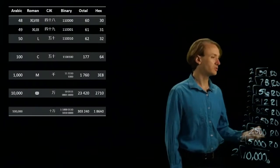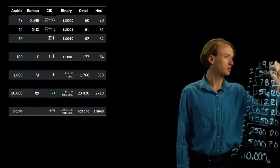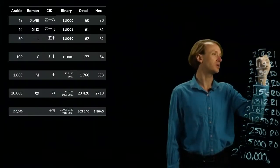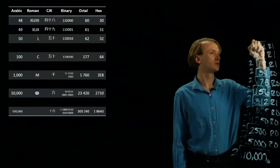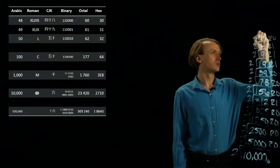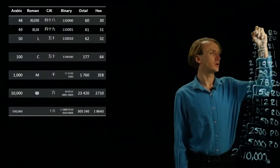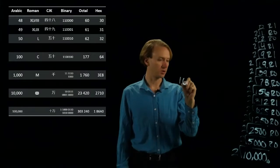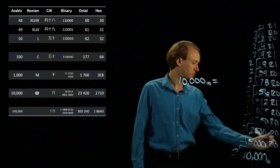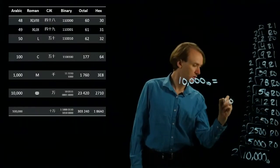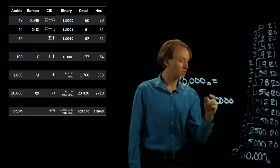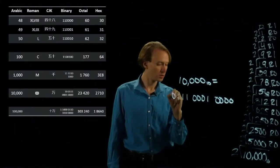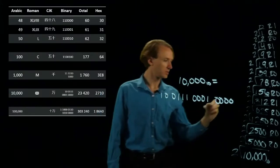39 divided by 2 gives me 19 remainder 1. 19 divided by 2 gives me 9 remainder 1. 9 divided by 2 gives me 4 remainder 1. 4 divided by 2 is 2 remainder 0. 2 divided by 2 is 1 remainder 0. And 1 divided by 2 is 0 remainder 1. So starting from the bottom, the number 10,000 in base 10 is equal to 0010 0111 0001 0000 in binary.